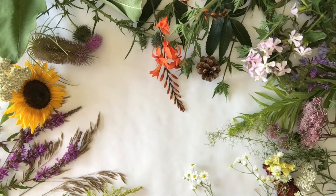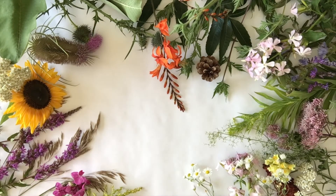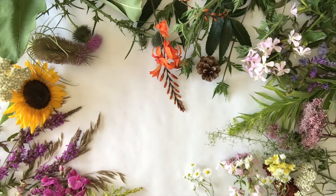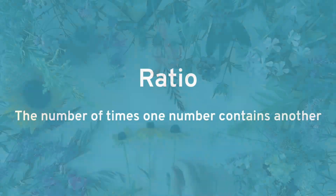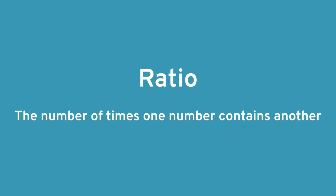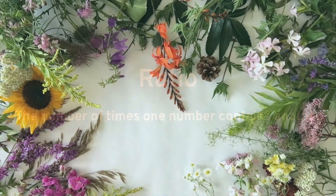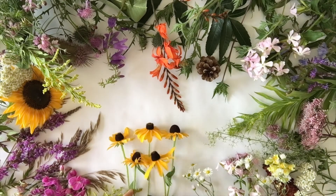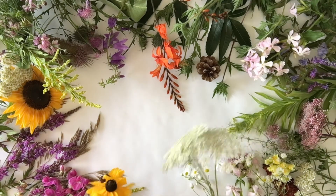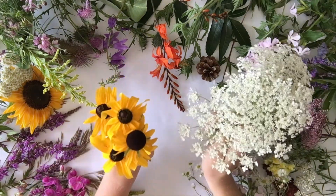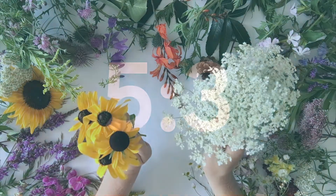It is apparent from these names that this number is impressive, but why? First, let's look at what a ratio is. A ratio is the number of times one number contains another. For example, here I have 5 black-eyed Susans and 3 Queen Anne's Lace. The ratio of black-eyed Susans to Queen Anne's Lace is 5 to 3 and can be written like this.